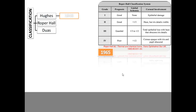In Roper Hall's classification, grade 3 involves 3 to 6 clock hours — one third to half limbal involvement. Corneal epithelium involvement is defined by how much iris detail is appreciable; a very hazy view of iris details is characteristic of grade 3.